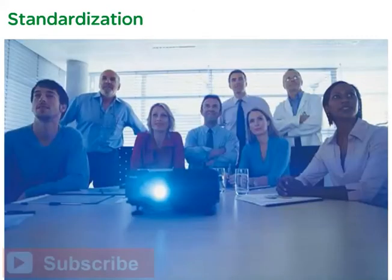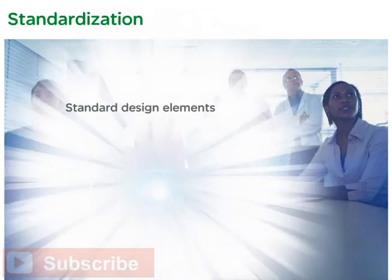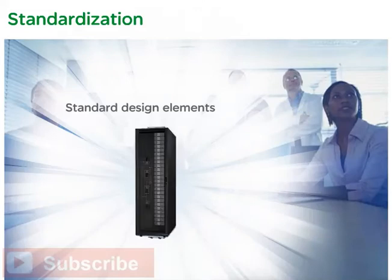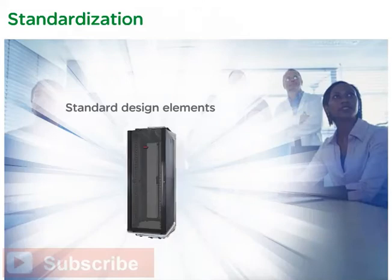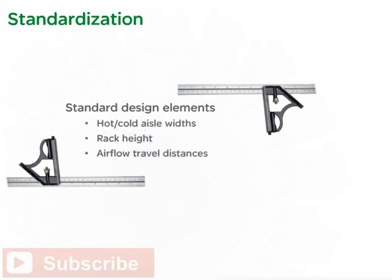In order for high-density pods to provide predictable performance, they must include standard design elements. This includes components such as air conditioners, power distribution, UPS, and racks. In addition, standard dimensions play a key role in predictably isolating hot and cold air flows. Standard dimensions include hot and cold aisle widths, rack height, and standard airflow travel distances.